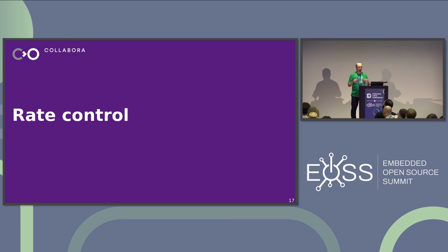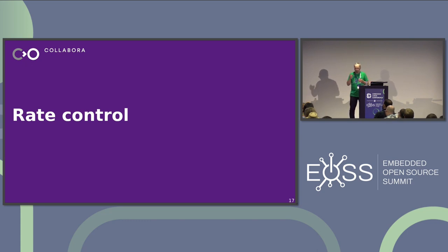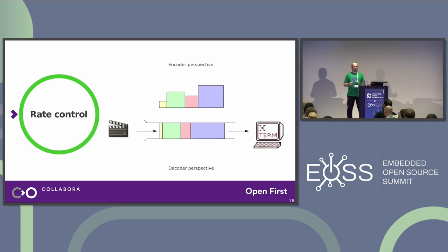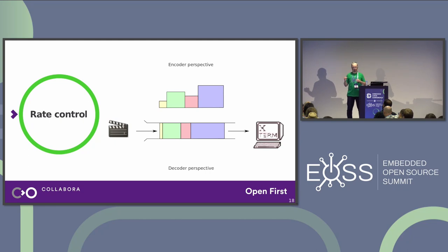Now let's talk about rate control — a general process you want applied when encoding regardless of codec type. Given the nature of video encoding, the sizes of each encoded frame vary and are generally unknown upfront. Intra-coded frames tend to occupy more space than inter-coded frames. Rate control has to do with how much space each encoded frame occupies.